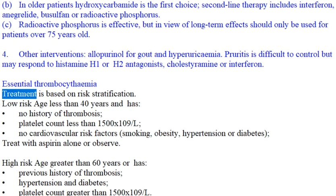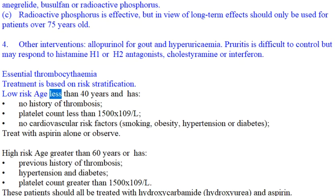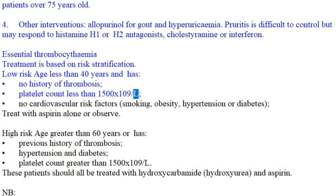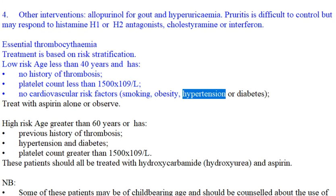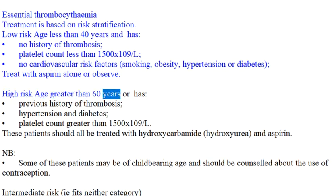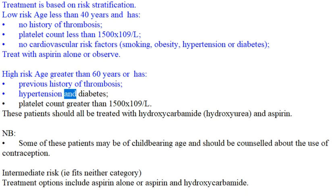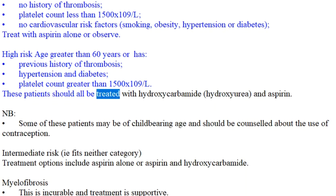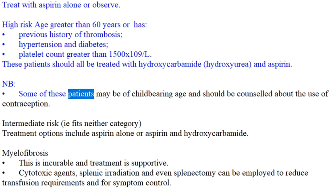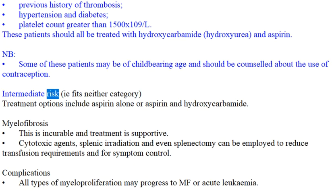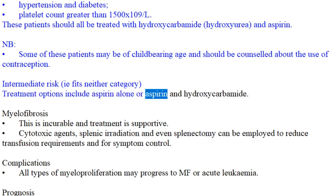Essential thrombocythemia: Treatment is based on risk stratification. Low-risk (age less than 40 years) and no history of thrombosis, platelet count less than 1500×10⁹/L, no cardiovascular risk factors (smoking, obesity, hypertension, or diabetes) — treat with aspirin alone or observe. High-risk (age greater than 60 years) or previous history of thrombosis, hypertension and diabetes, platelet count greater than 1500×10⁹/L — these patients should all be treated with hydroxycarbamide (hydroxyurea) and aspirin. NB: Some of these patients may be of childbearing age and should be counseled about contraception. Intermediate risk (fits neither category): treatment options include aspirin alone or aspirin and hydroxycarbamide.